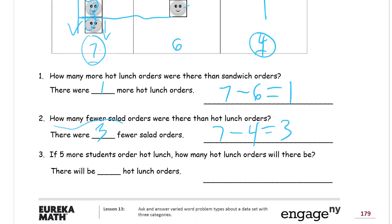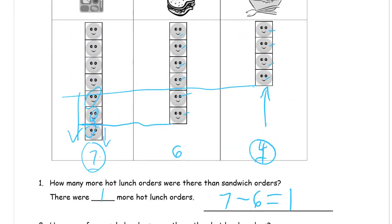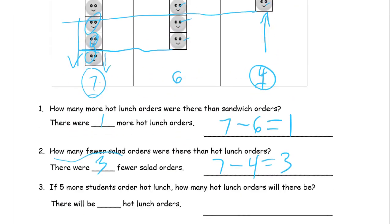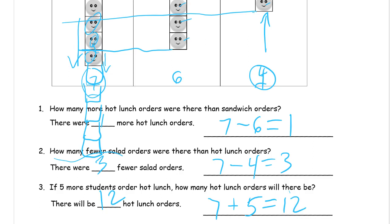If five more students order hot lunch, how many hot lunch orders will there be? There are already seven, and if there are five more, seven plus five more — how much is that? Seven plus five is twelve. So there'll be twelve hot lunch orders.